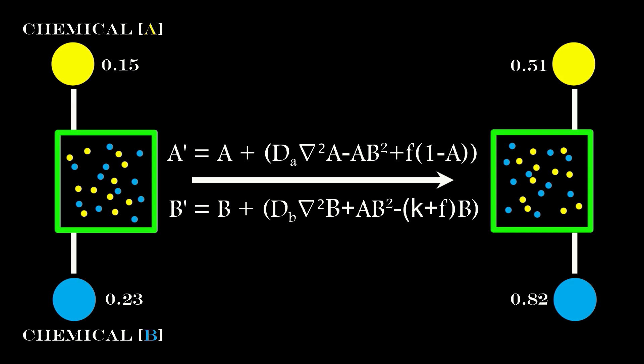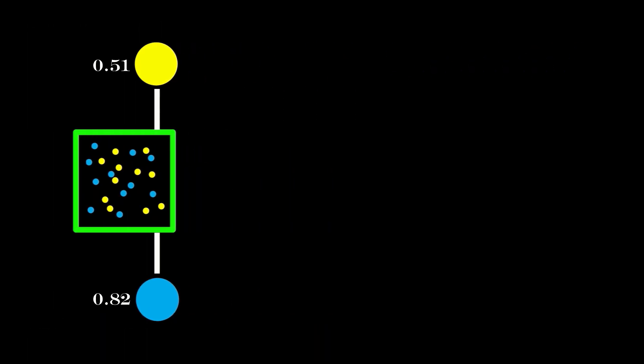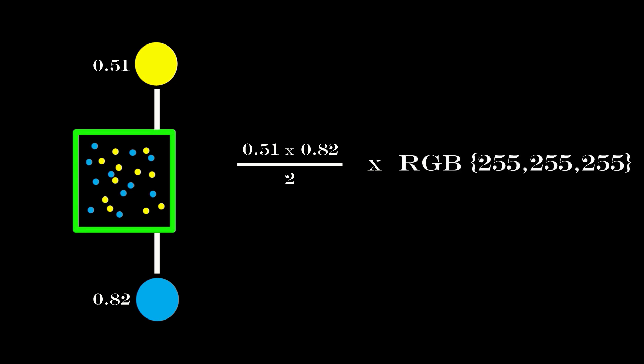So I now know the concentrations for both chemicals at this pixel in the next frame. Plotting it on screen simply means taking their average and scaling it across the RGB components to give a grayscale colour. You then simply rinse and repeat for all pixels in the frame, store them in an array, and then do the same over and over again to see how the chemicals diffuse and react together.